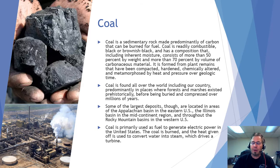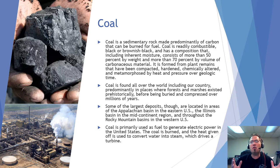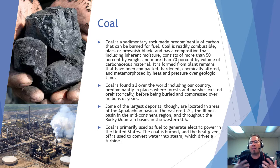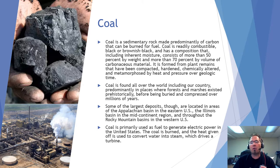Some of the largest coal deposits are in the Appalachian Basin — West Virginia, Virginia, Pennsylvania — the Illinois Basin, and out in the Rocky Mountains, including huge mines in Wyoming. Coal is the primary source of fuel for electric power. Almost all power plants, unless nuclear, are coal-fired. Trains bring hundreds of bins of coal to large plants, which burn it to generate steam, turn turbines, and create electricity.